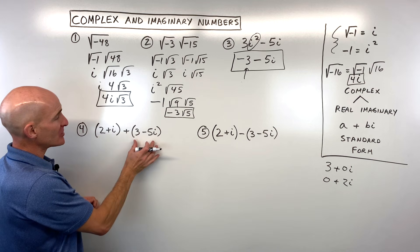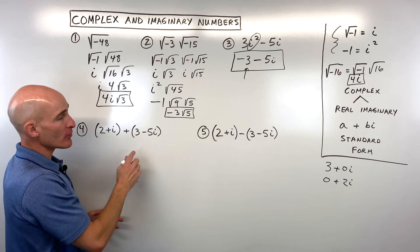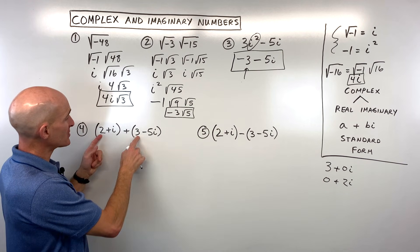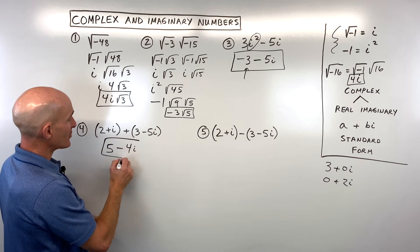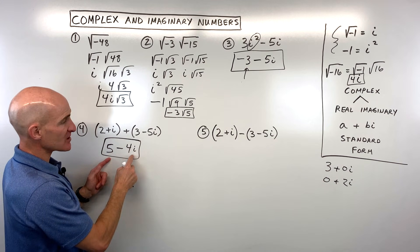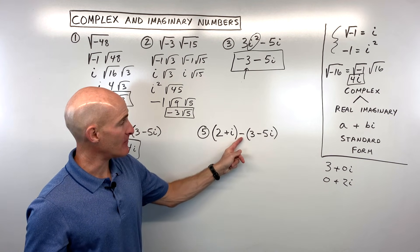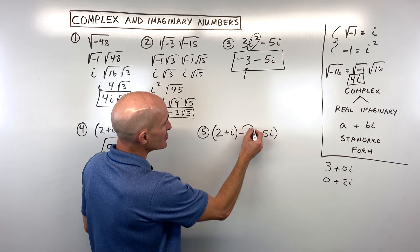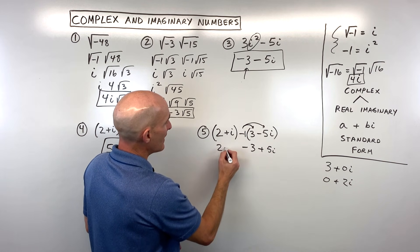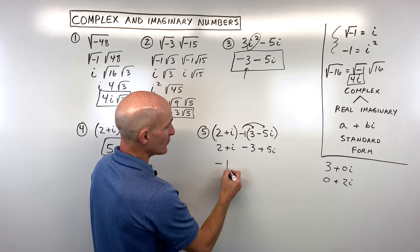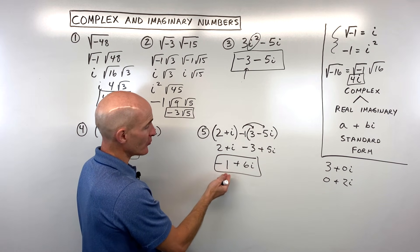For example four, we're adding two complex numbers. Think of i as like a variable, and just combine like terms: two plus three is five, and one i plus negative five i is negative four i, giving us five minus four i in standard form. For example five, we're subtracting the same two complex numbers. Think of it as distributing a negative one into the parentheses, giving negative three plus five i. Then two plus negative three is negative one, and one i plus five i is six i, so the result is negative one plus six i in standard form.